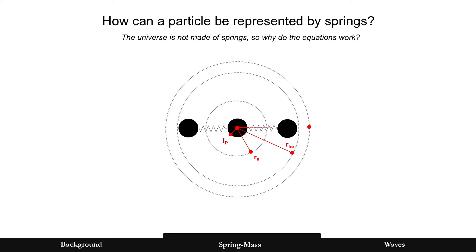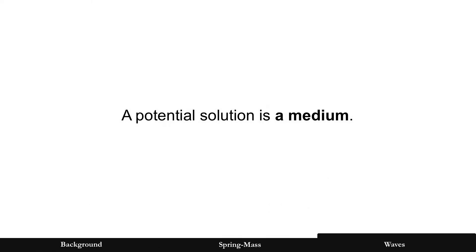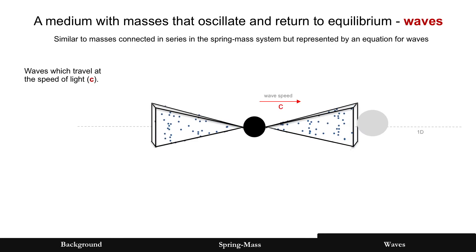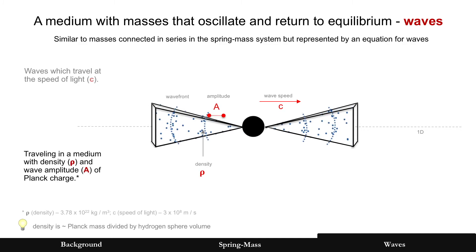All right, so three down, two more to go. Getting a little bit closer, but how can a particle be represented by springs? Because the universe is not made of springs, so why do the equations work? The potential solution now is a medium. A medium just like sound waves, which we started off with. But instead of sound waves traveling at sound, we're going to have these waves travel much, much faster, which is the speed of light, c.